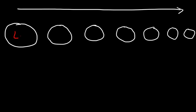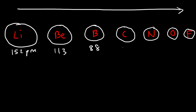As you can see, the size of the atom decreases as you go toward the right. Lithium has an atomic radius of 152 picometers, beryllium is 113, boron is 88, carbon 77, nitrogen is 70, oxygen is 66, fluorine is 64. Neon is slightly bigger than fluorine at about 69, so there are some exceptions, but generally speaking the atomic radius decreases from left to right.